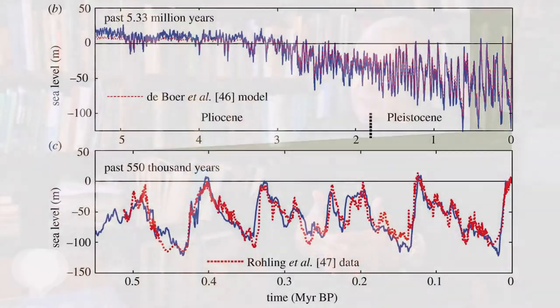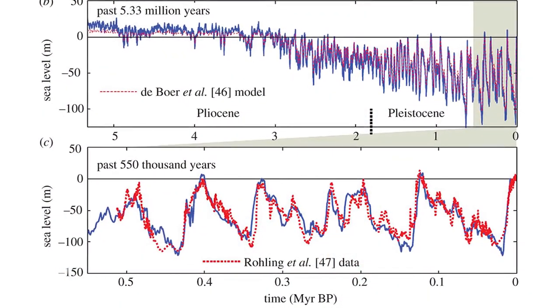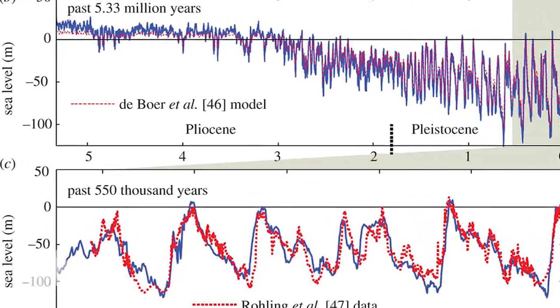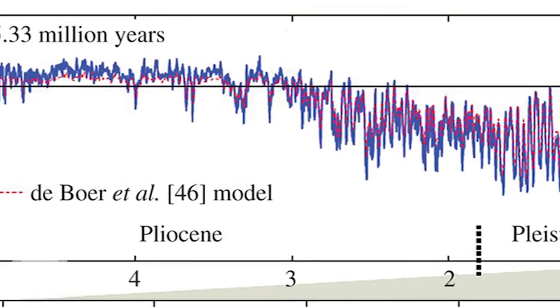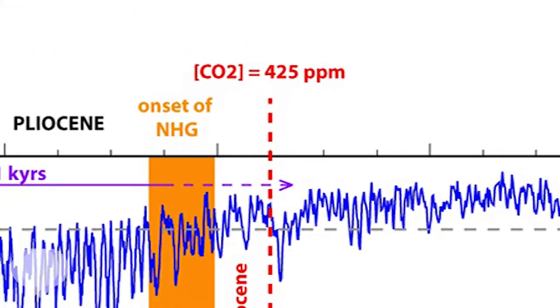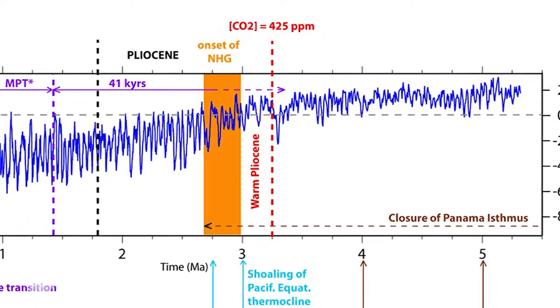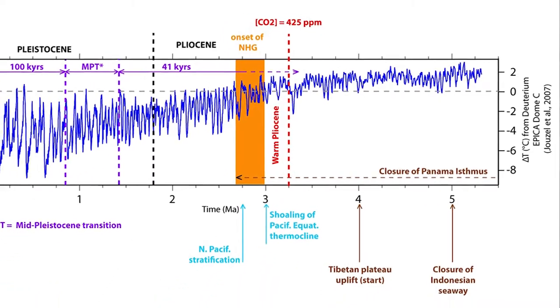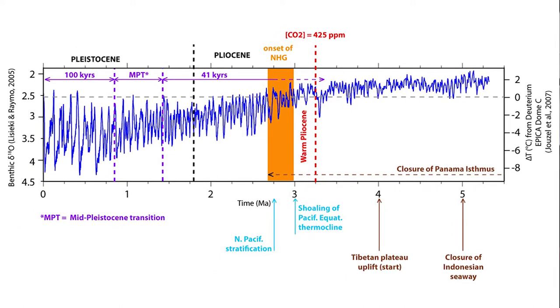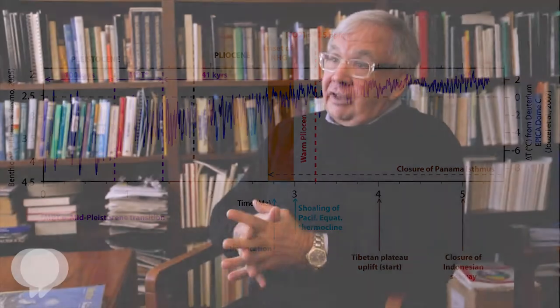It has been argued that three million years ago, sea levels were dramatically higher than they are at present. This is the so-called Pliocene Warm Period. The carbon dioxide load in the atmosphere was about equal to modern — around 400 parts per million by volume. It's been argued that sea level at that time was higher by 22 plus or minus 5 meters than it is at present.